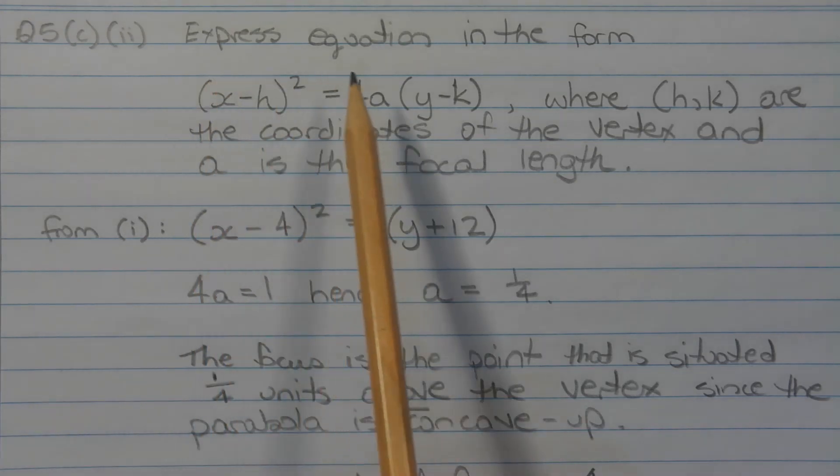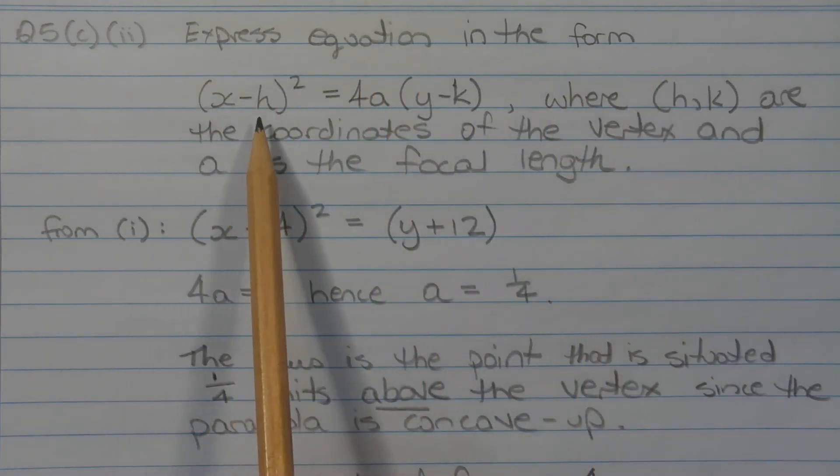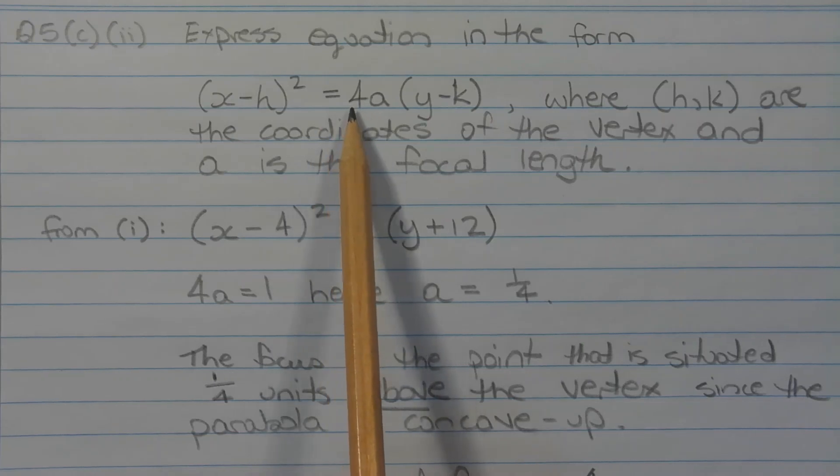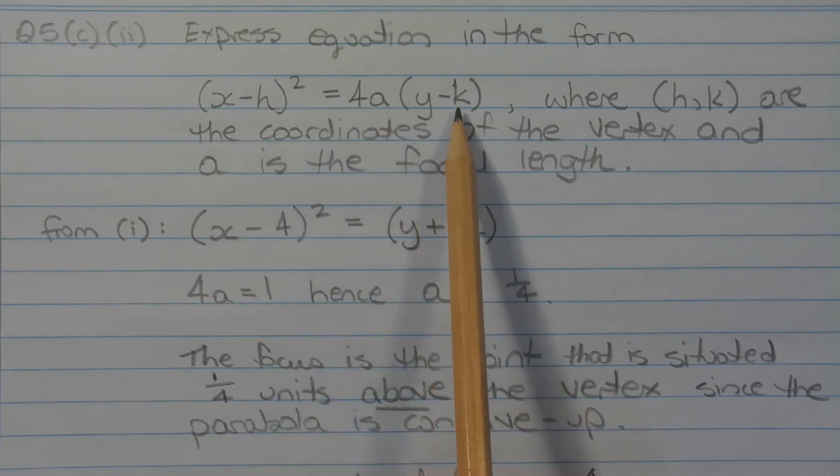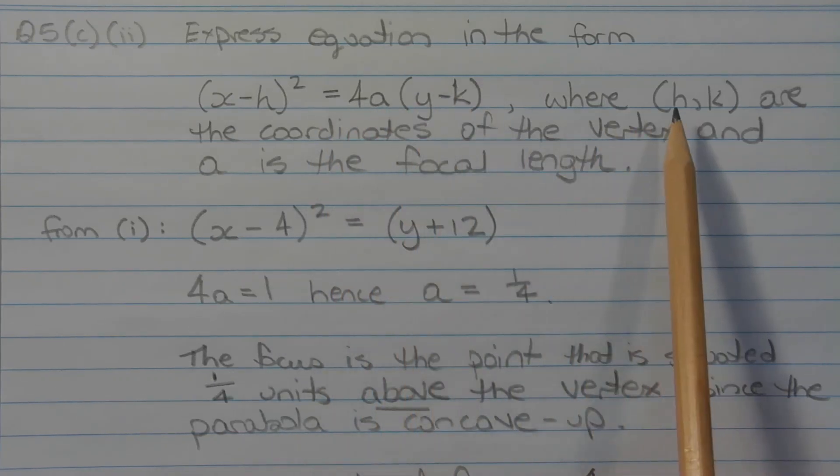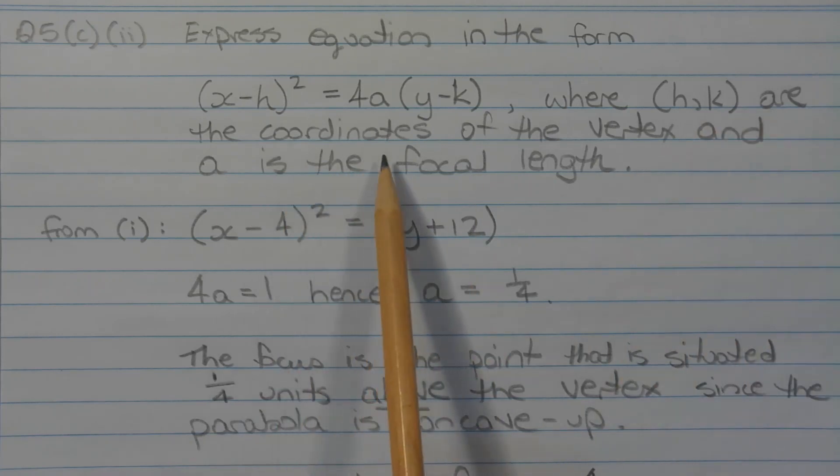So we're going to express the equation in the form x minus h in brackets squared is equal to 4a outside of y minus k in brackets, where h, k are the coordinates of the vertex and a represents the focal length. Now, from part 1, we have x minus 4 in brackets squared is equal to y plus 12.